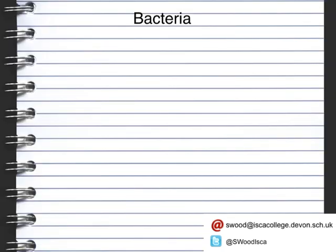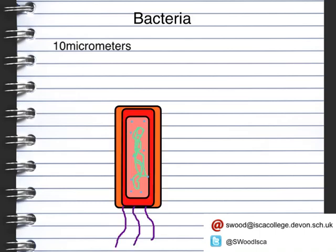Bacteria are very, very small cells, up to about 10 micrometers long. In comparison with other cells we've looked at, such as animal cells and plant cells, they are slightly different. This is a rough diagram of a bacterial cell, and we're going to look at what the individual parts of the cell are.